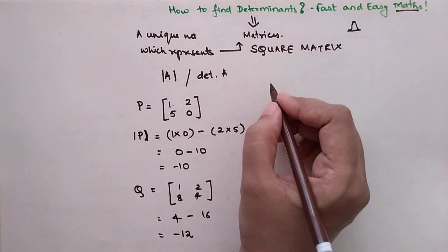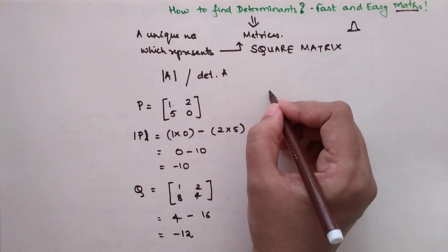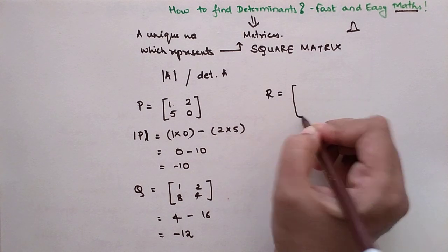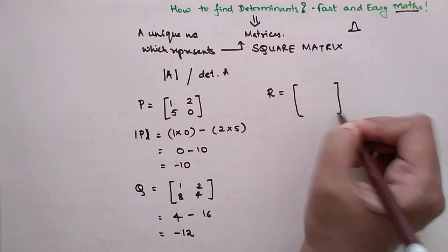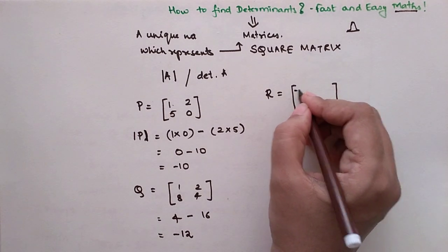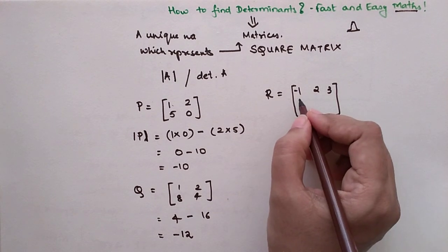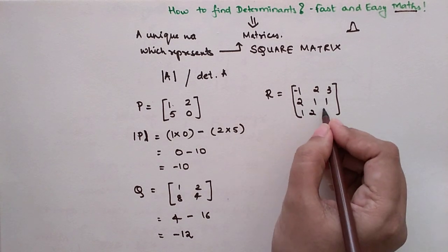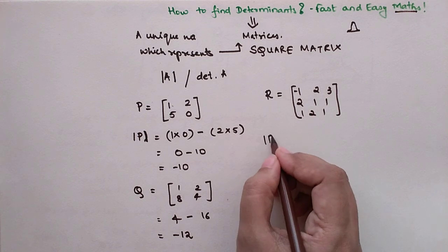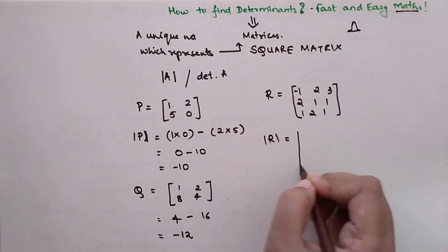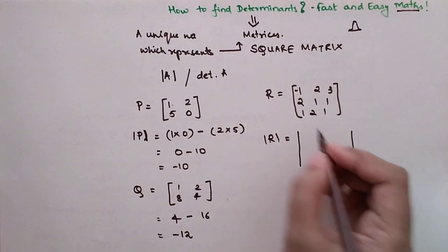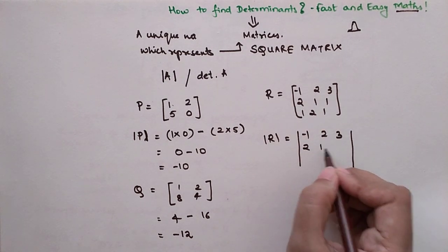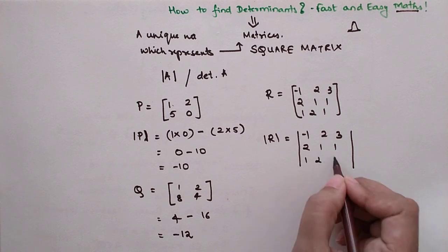Now let's see what happens when we have a 3×3 matrix. Let's say we have a matrix R with elements: row 1 = [−1, 2, 3], row 2 = [2, 1, 1], row 3 = [1, 2, 1]. When we find the determinant, we put the entire elements between two vertical bars and copy the elements as they are.